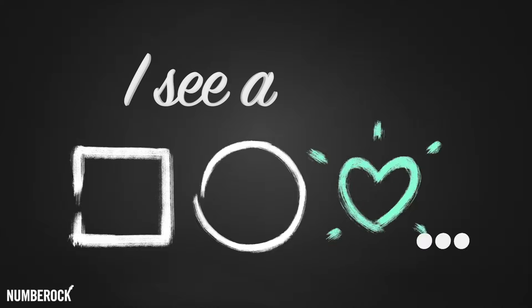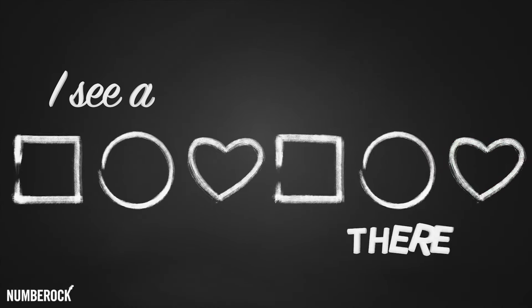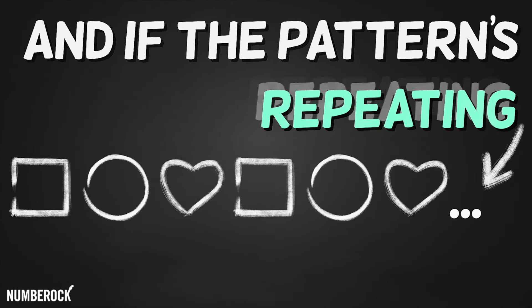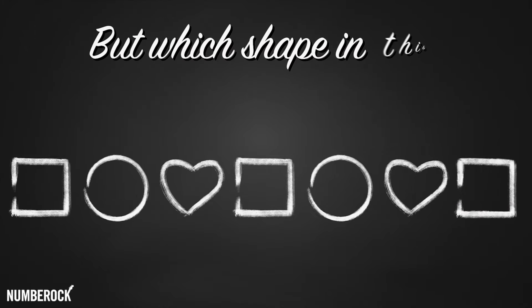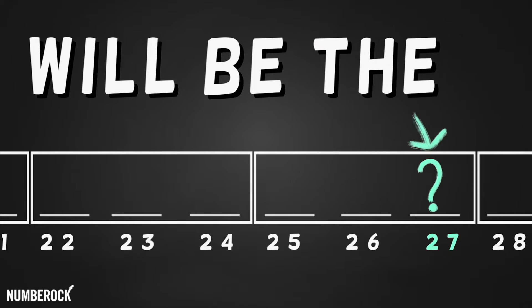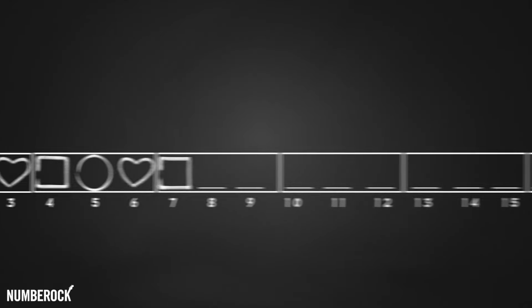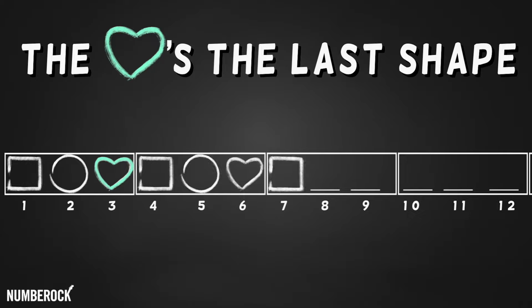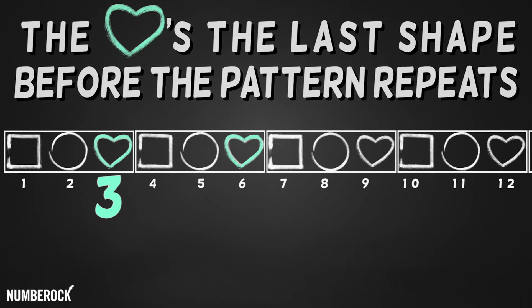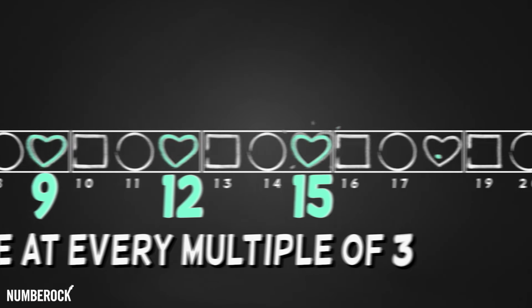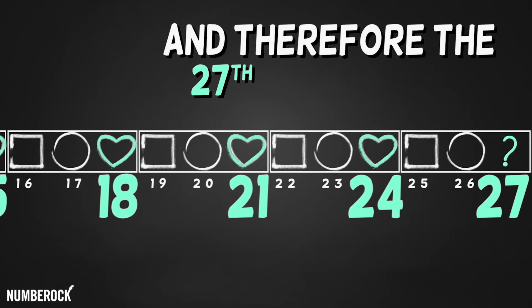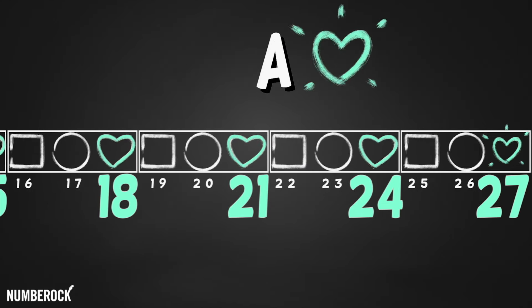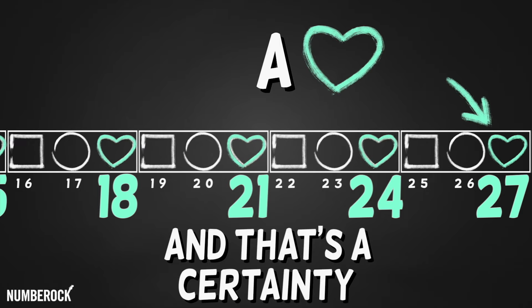I see a square, circle, heart. Squared circle heart there. And if the pattern's repeating, the next shape will be a square. But which shape in this sequence will be the 27th? The heart's the last shape before the pattern repeats, so a heart will be at every multiple of three. And therefore the 27th shape will be a heart. And that's a certainty.